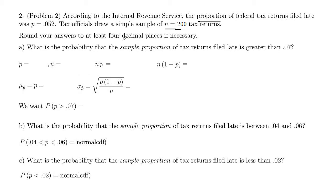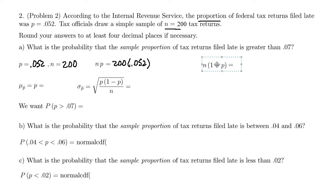We're rounding our answers to four decimal places if necessary. We're dealing with proportions, which would normally be a binomial distribution, but we'd like to approximate with the normal distribution. Our P is 0.052 and N is 200. To see if the normal approximation is appropriate, we look at N times P: 200 times 0.052 equals 10.4, which is greater than or equal to 10.